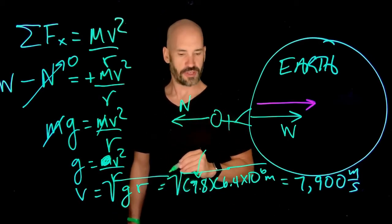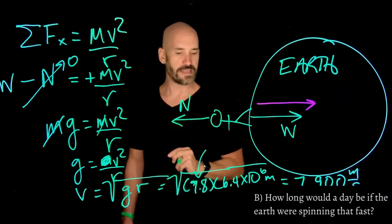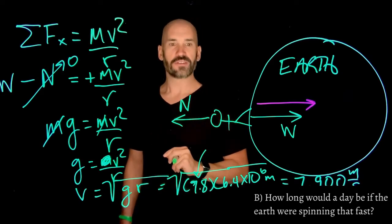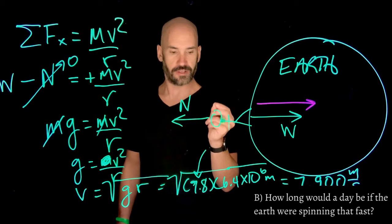So that begs another interesting question, which is part B for this slide, that says, how long would a day be if the earth were spinning that fast? So, in other words, again, this is a period question. We're trying to find the period here.